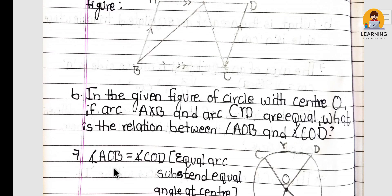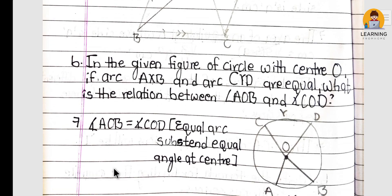Question 3(b): In the given figure of a circle with center O, if arc AXB and arc CYD are equal, what is the relation between angle AOB and angle COD? Angle AOB equals angle COD. The reason is: equal arcs subtend equal angles at the center.